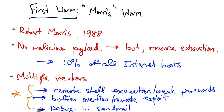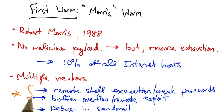A key theme that we'll see in the design of other worms is this use of multiple vectors. Any particular worm may end up using a different set of vectors depending on the remote vulnerabilities it's trying to exploit. But the idea that any worm should be able to exploit multiple weaknesses gives it more ways to spread and often speeds up the propagation of the worm.